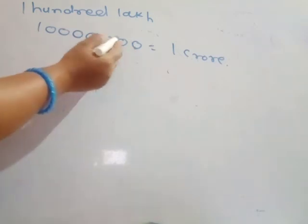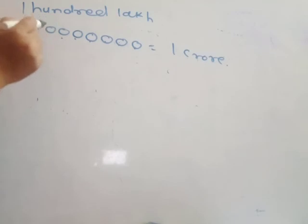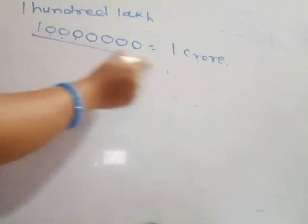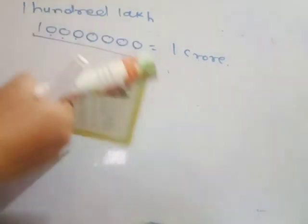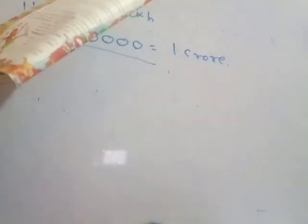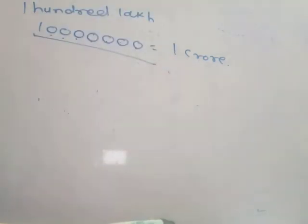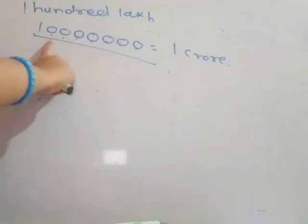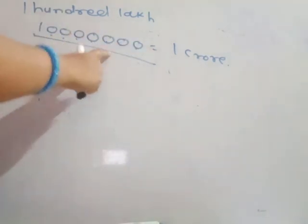The place value sequence is: 10, 100, 1,000, 10,000, 10 lakh, and then 1 crore. So 100 lakhs equals 1 crore. In 1 crore there are 7 zeros. In 1 lakh there are 5 zeros, and in 1 crore there are 7 zeros. Try writing this number — don't get lost in all the zeros. Remember: 1 lakh = 5 zeros, 1 crore = 7 zeros.